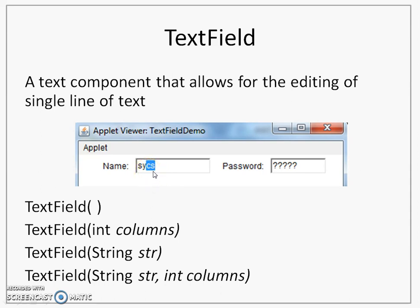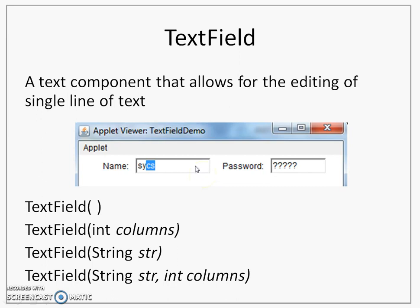There is some text that I have selected, and you can do some editing with this selected text. There are constructors available. The first one is a default constructor. The second constructor helps us to create a text field with the specified number of columns. For example, if I write the number of columns as 10, then the text field will be wide enough to show 10 columns, where each column displays one character. This does not mean you will be allowed to enter only 10 characters — if you enter more than 10 characters, the characters will start scrolling.